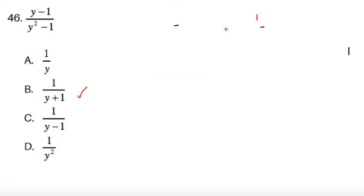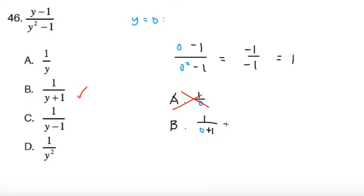Now alternatively, we can try to use the substitution method. We can substitute any value that we want. Let's say we substitute y equals 0. Now if I let y equals 0, then this expression becomes 0 minus 1 divided by 0 squared minus 1. And this equals negative 1 over negative 1, which equals 1. So let's check with the choices. Choice A, 1 over 0, that's already not a valid value. So we can cross answer A out. Now for item B, we're going to get 1 over 0 plus 1. So this is indeed 1 equals 1. So we can consider this.